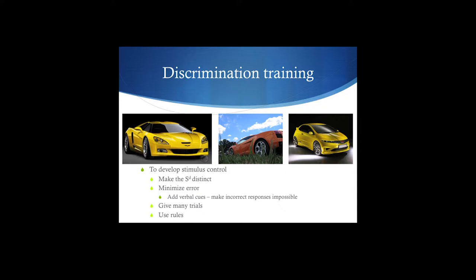There are fewer differences between the yellow one and the orange one other than the color. But the shape is going to be somewhere similar — they're both more sporty, both lower, that type of thing. So in order to be able to discriminate between these different cars, you want to make them as distinct as possible.